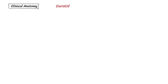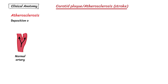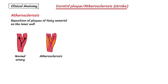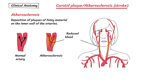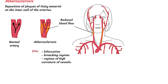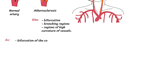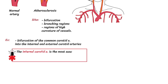Carotid plaque, atherosclerosis, and ischemic stroke: atherosclerosis is the deposition of plaques or fatty material on the inner wall of the arteries, which reduces blood flow. Atherosclerosis usually occurs at bifurcations, branching regions, and regions of high vessel curvature — for example, the bifurcation of the common carotid artery into the internal and external carotid arteries. The internal carotid artery is the most susceptible to atherosclerosis and can result in reduced blood flow to the brain.